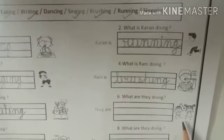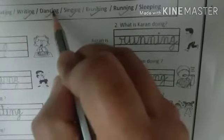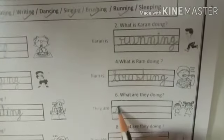What are they doing? Dancing. What are they doing? They are dancing. So write the spelling of dancing: D-A-N-C-I-N-G, dancing.